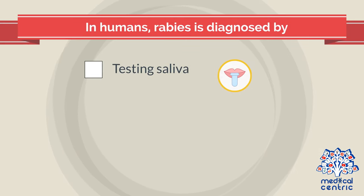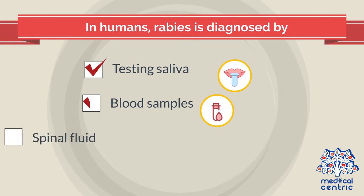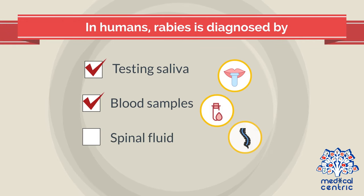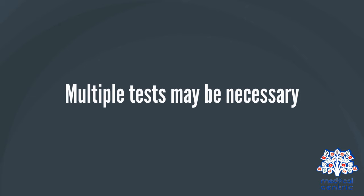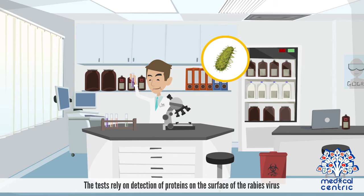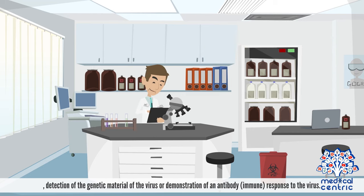In humans, rabies is diagnosed by testing saliva, blood samples, spinal fluid, and skin samples. Multiple tests may be necessary. The tests rely on detection of proteins on the surface of the rabies virus, detection of the genetic material of the virus, or demonstration of an antibody or immune response to the virus.